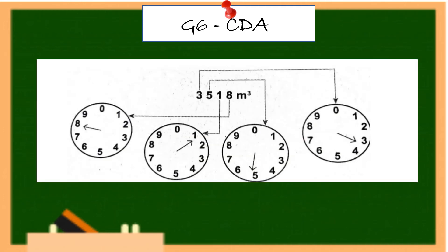To get the exact meter reading, start from right to left, or from the highest number dial clockwise. The water meter shown reads 3,518 cubic meters. Starting from the right, we have three, five, one, and eight, giving us 3,518 cubic meters.